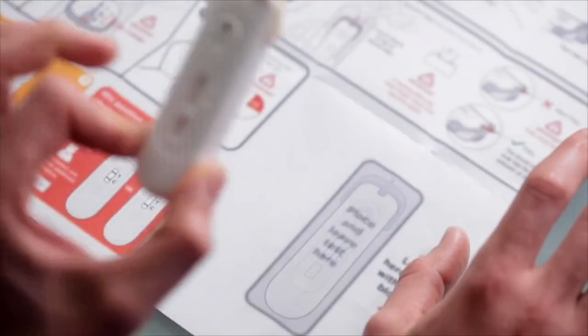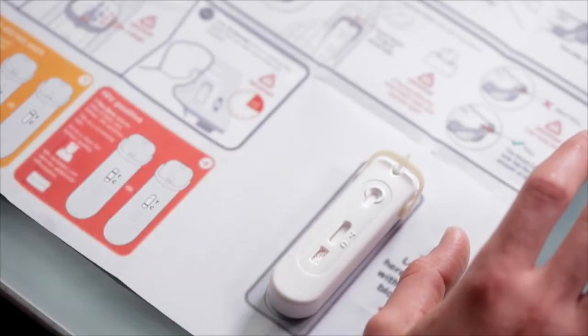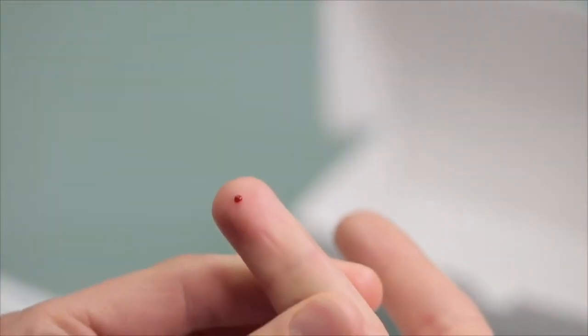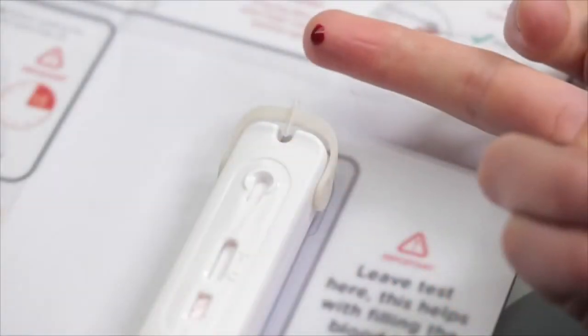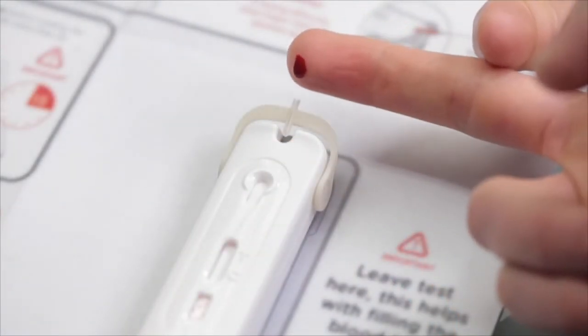Now place the test down on the instructions in the bottom right corner. This will make it easier to fill the tube with blood. Squeeze firmly behind the prick site. For the next step, you should not pick up the test. It should stay on the table.